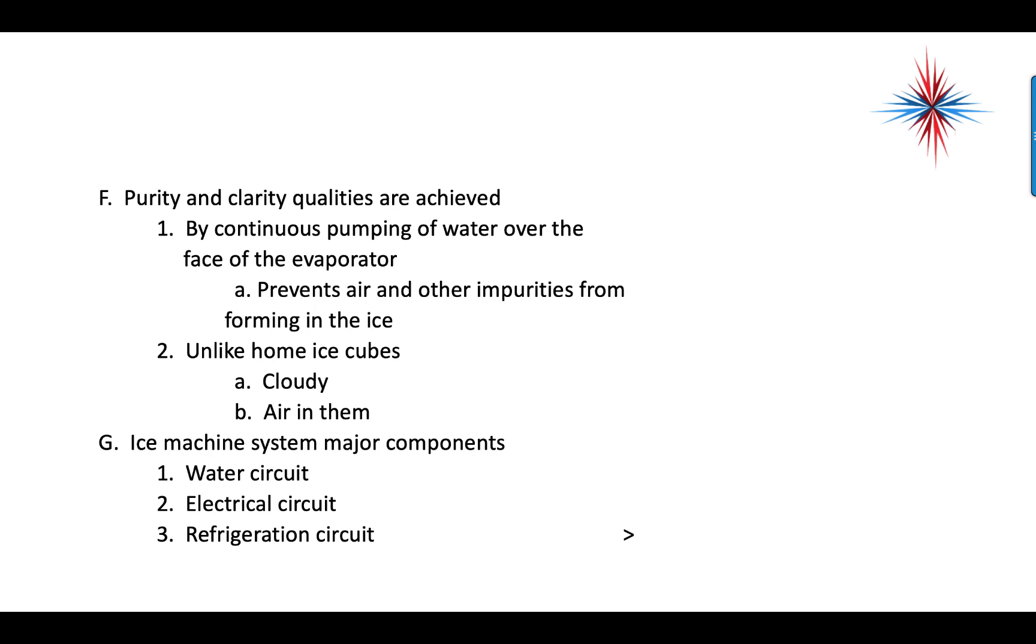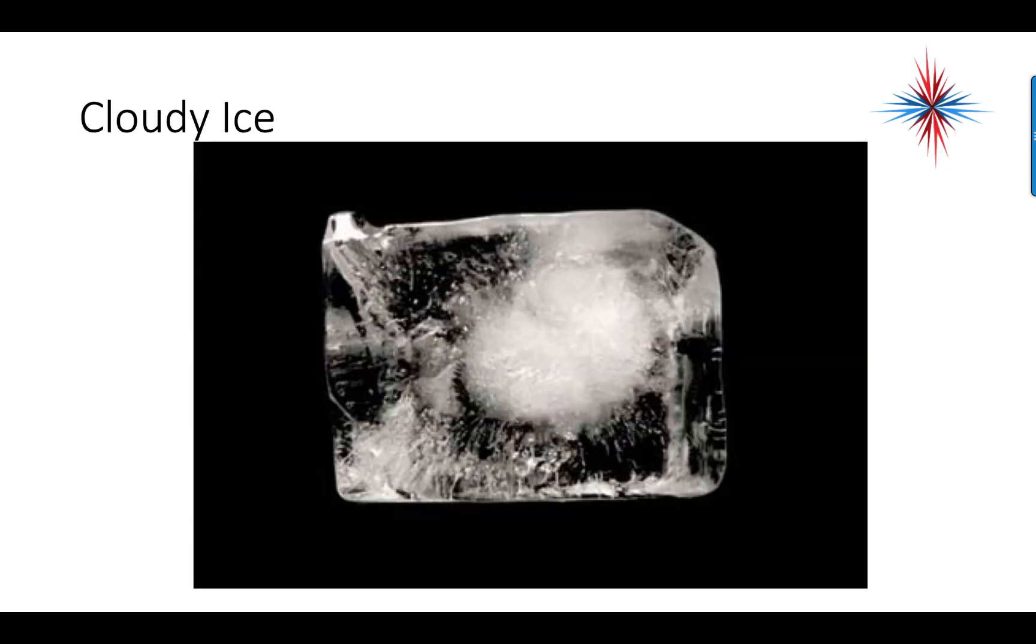Ice machines have several major components: a water circuit, an electrical circuit, and a refrigeration circuit. This is an example of what we mean by cloudy ice.